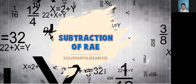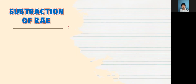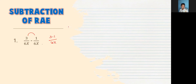Let's proceed to subtraction of RAE. Parang kaparehas lang siya ng addition — you just subtract. Given: 3 over 6X minus 1 over 6X — subtract 3 minus 1 over the same denominator, giving 2 over 6X. Both divisible by 2, so magiging 1 over 3X. That's the answer.